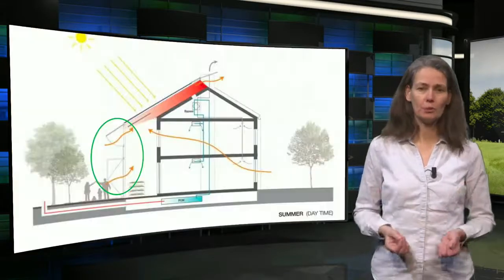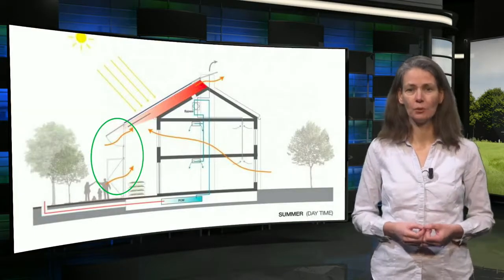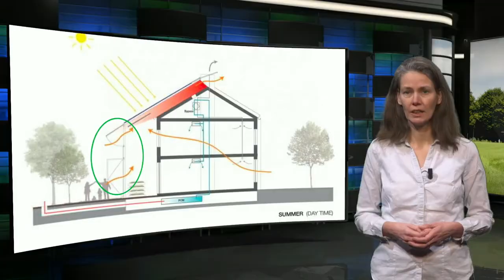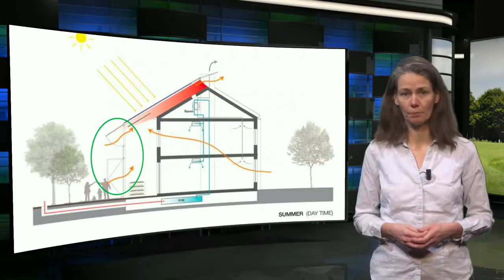The cheapest way to reduce the energy demand for moving the air is by using the wind, shown by the open window and door in this Pret-a-Loger summer ventilation scheme. Another cheap method is using the chimney effect caused by temperature differences, as shown in red in this image.